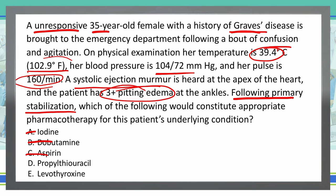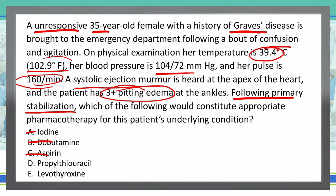D: Propylthiouracil or PTU. That actually seems like it might be the one — I know we use that in thyroid storm situations. Let's keep that one and double check the last choice. E: Levothyroxine. Levothyroxine is a treatment for low thyroid — we're dealing with high thyroid. This is contraindicated in thyrotoxicosis. So that's marked out, which leaves D as my final answer.